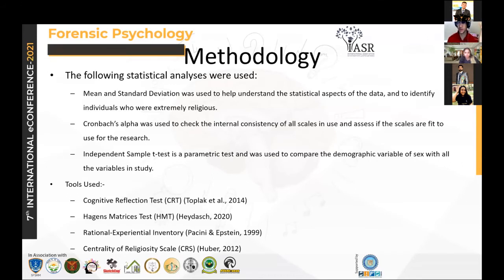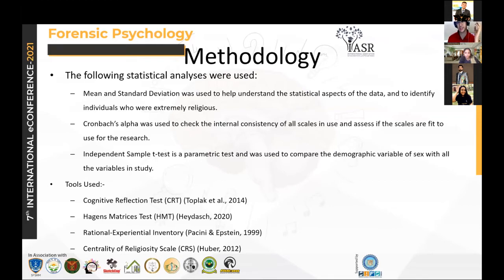The tools used were the Cognitive Reflection Test (CRT), three items of which I showed above; the Higgins Matrices Test (HMT), one item of which I showed above; a Rational Experiential Inventory; and the Centrality of Religiosity Scale. Of these, two have their own dimensions: the Rational Experiential Inventory has four dimensions and the Centrality of Religiosity Scale has five dimensions. These will be added in post-hoc analysis.